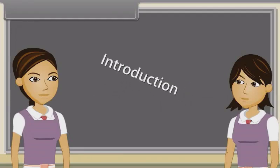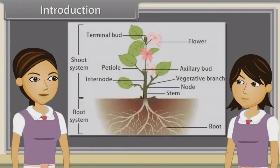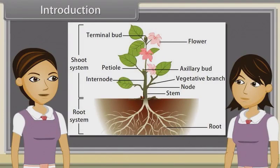When we observe a plant, we see that every plant has roots, stem and leaves. Plants also have flowers and fruits. We have already discussed characteristics, types, modifications and functions of roots. Now we will study stem.